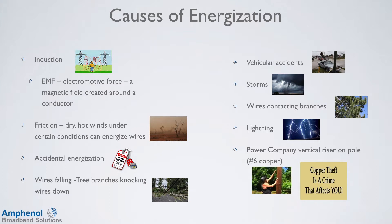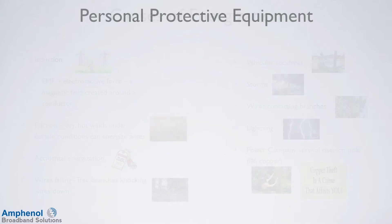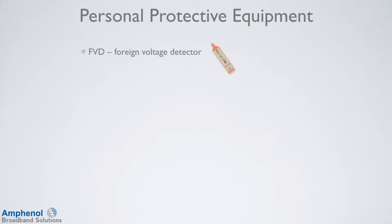Always visually inspect the power company's vertical riser for breaks or missing wire from theft. This wire bleeds inductive voltage from the pole near the primary power lines. If missing near the bottom, the wire above will be energized and waiting for you to become the ground. To protect yourself against electrical hazards, there are several pieces of personal protective equipment. A foreign voltage detector indicates that voltage is present — it does not detect current. The amp clamp measures current flow through a wire and can be used at a tap, ground block, and inside the home. A volt-ohmmeter can be used to measure voltage, current, and resistance.